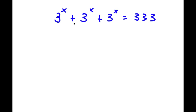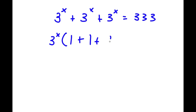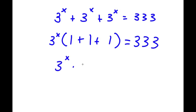In this problem, I have 3 to the power of x plus 3 to the power of x plus 3 to the power of x is equal to 333. To solve this, I'm first going to factor out 3 to the power of x from the left-hand side. So now I have 3 to the power of x times (1 plus 1 plus 1), which is equal to 333. If I add what's in the parentheses, I get 3. So now I have 3 to the power of x times 3 is equal to 333.